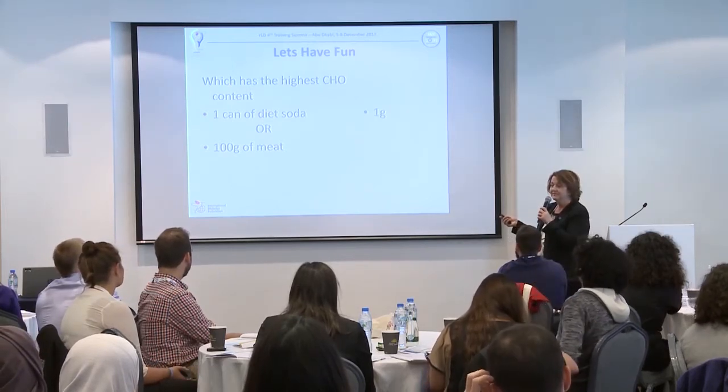One can of diet soda versus 100 grams of meat: there are no carbs in meat — you only count it if there is more than 200 grams, as proteins convert to carbohydrates later in the body, but it contains no direct carbohydrates. One teaspoon of fructose sweetener has 4 grams of carbs, while one teaspoon of sorbitol has zero.